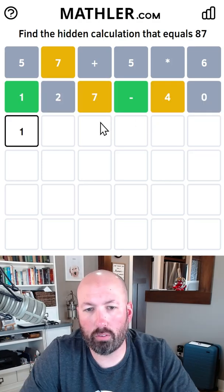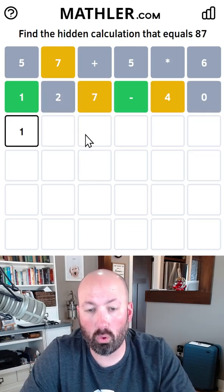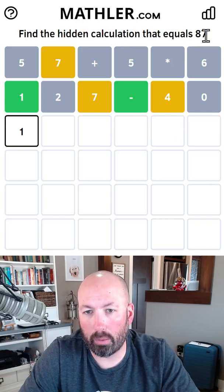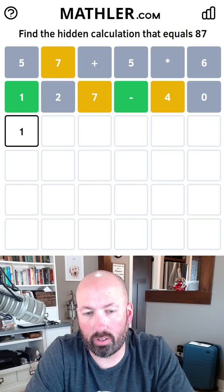Okay. So if we have 100 and something four and we subtract something seven, that'll end up with a seven in the one spot. So I think that's what we're doing.